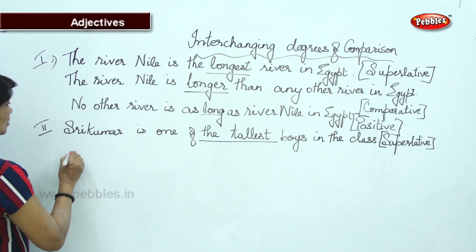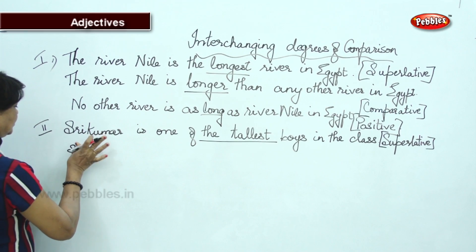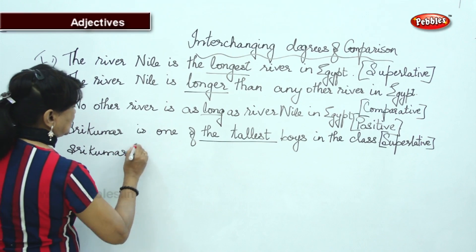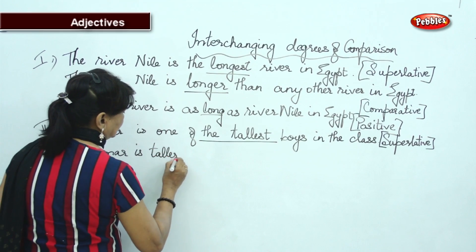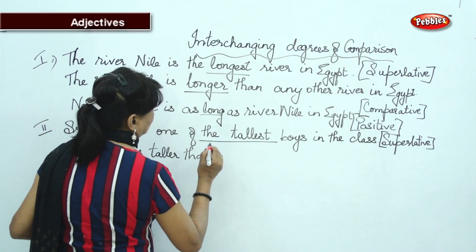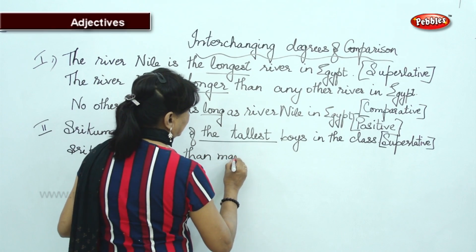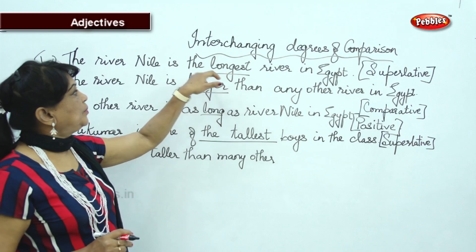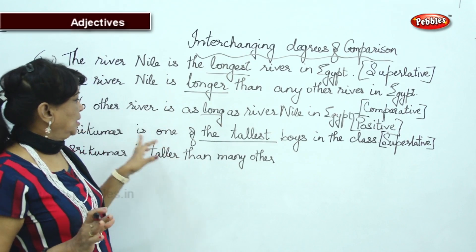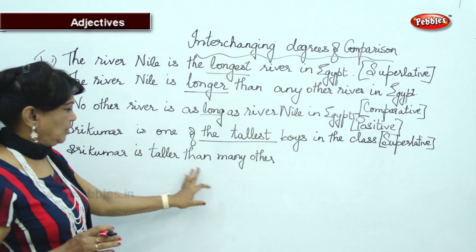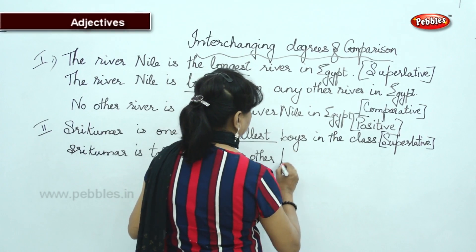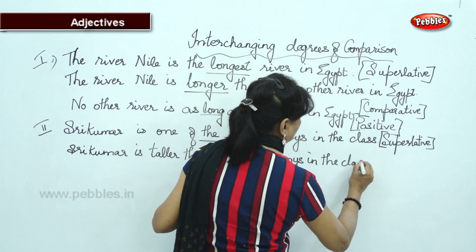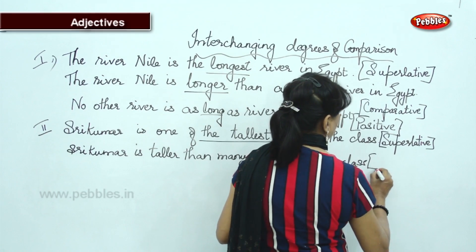I will change it to comparative: Shri Kumar is taller than many other boys in the class. I am not using 'any other' — we use 'any other' only when it is 'the tallest' or 'the longest.' But here, when we have 'one of the' in the superlative degree, we use 'many other.' So this will be comparative.